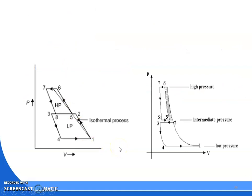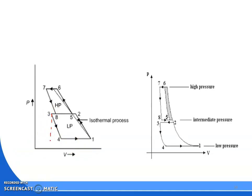Now, drawing the PV diagram: 4 to 1 is suction in the low-pressure cylinder. We are considering clearance volume here as well. This point is your top dead center (TDC) and this point is your bottom dead center (BDC). This is your clearance volume.